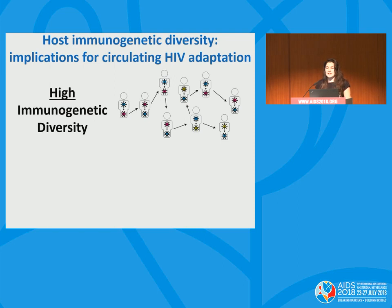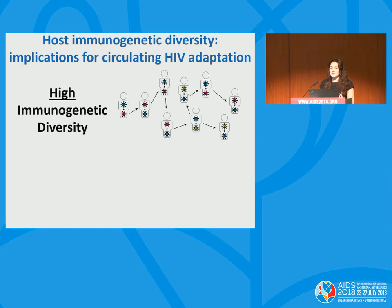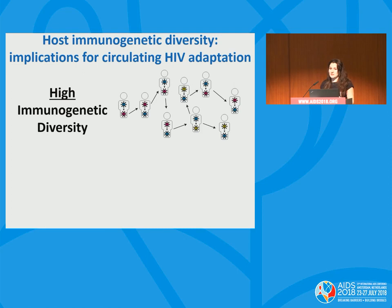In most HIV epidemics, population immunogenetic diversity is relatively high, so a donor and recipient are unlikely to share HLA class 1 alleles. The first individual selects for immune escape mutations specific to their HLAs, transmits to another individual who likely doesn't share those alleles, many mutations revert, and new ones are selected in the recipient. This continues as the virus moves through the population, staying more or less the same at the population level.